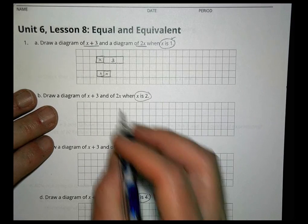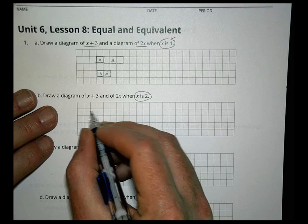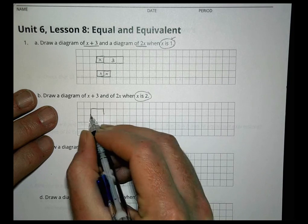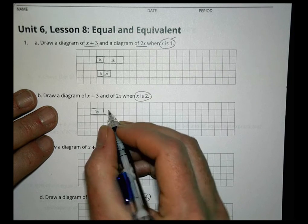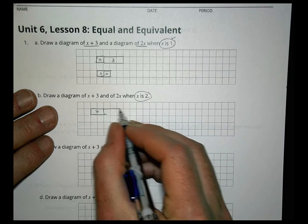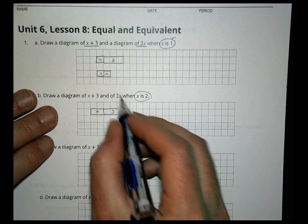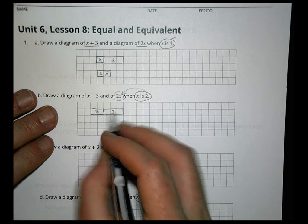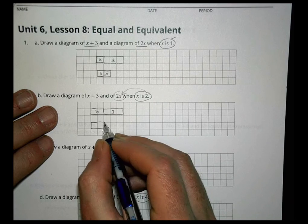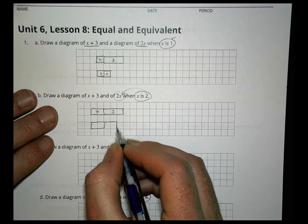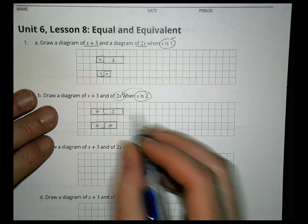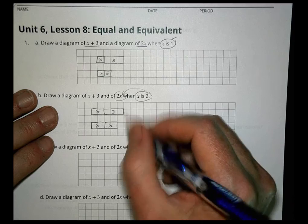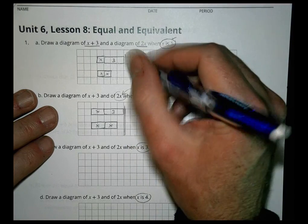What if x is 2? We go 1, 2 for our x, then add 3 squares. Then for 2x, we plug in 2 for each x and draw two of those. Again, not going to be equivalent — just not the same.